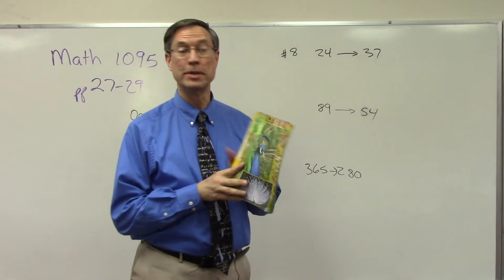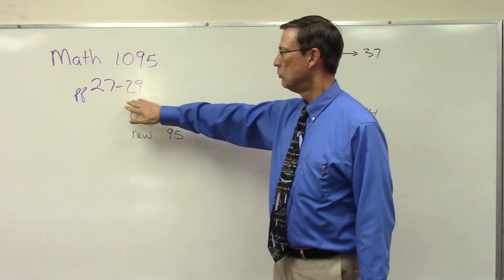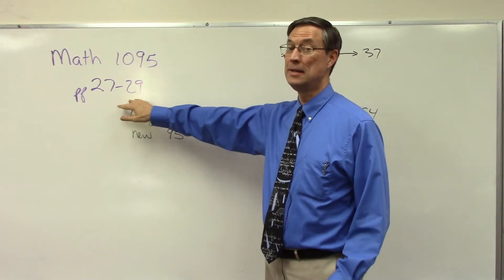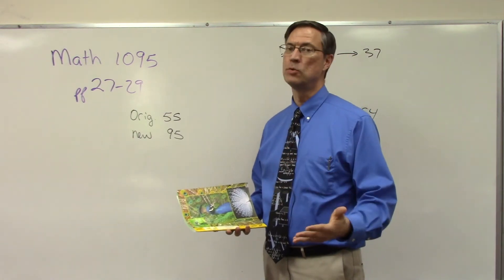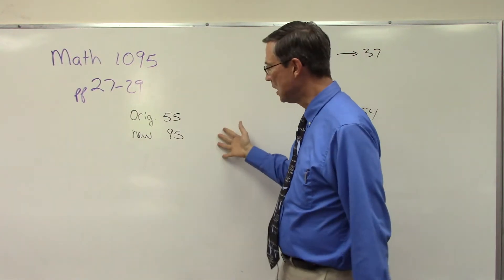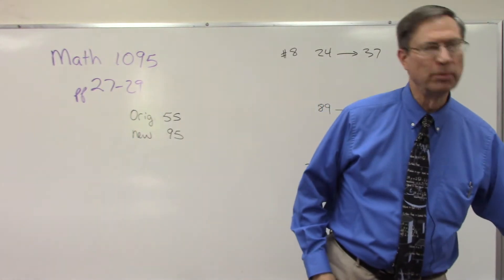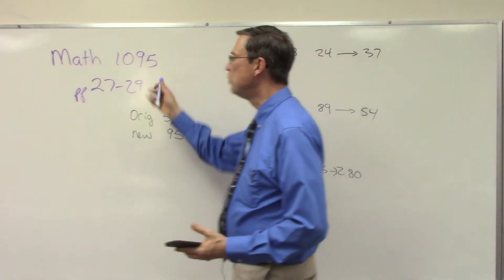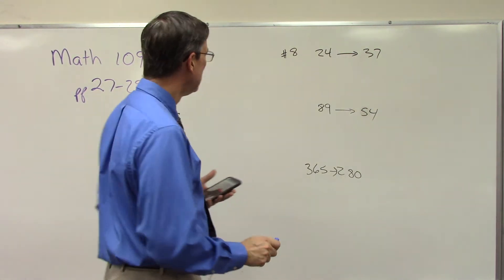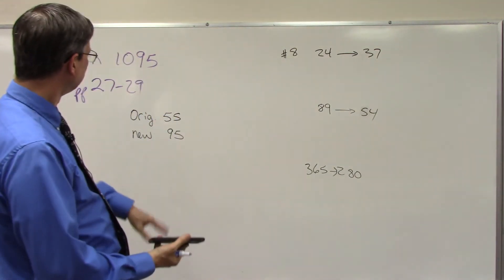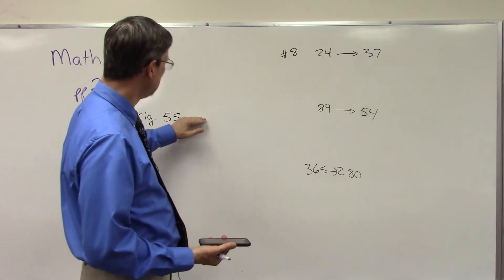This lesson is for math pace 1095 and we're going to talk about pages 27 through 29. This is figuring out a percent increase or percent decrease. They give a formula — if you look at page 27, they give some examples to go through. I'm going to take three or four problems from these pages. The formula is: you subtract the new number minus the original number.